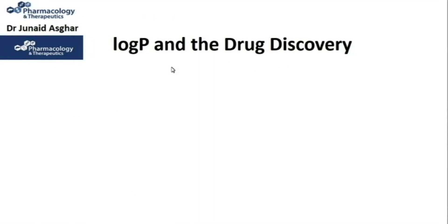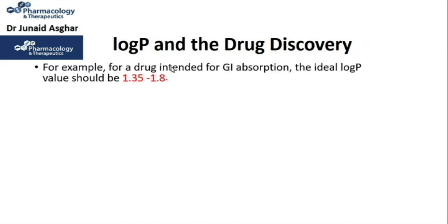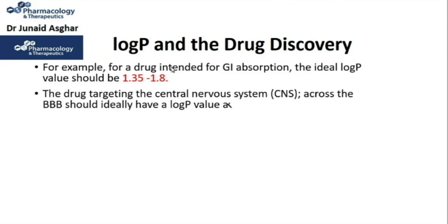Lipophilicity plays a significant role in drug discovery and compound design, and is often quantified as log P. Among other criteria, new drugs are screened for their log P values as a measure of lipophilicity. For a drug intended for GI absorption, the ideal log P should range between 1.35 and 1.8. A drug targeting the central nervous system across the BBB should ideally have a log P value around 2.